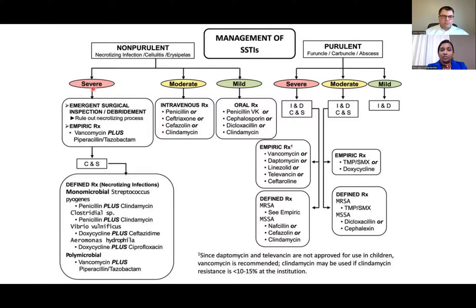In the non-purulent severe category, you're worried about ruling out necrotizing fasciitis — patient is septic, hypotensive, really bad infection. You need broad-spectrum antimicrobials: vancomycin plus piperacillin-tazobactam. Culture and surgery are both important. It's also important to add clindamycin because, in a streptococcal infection, clindamycin binds to the toxin released by streptococcus.